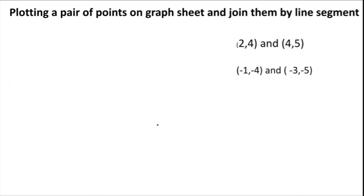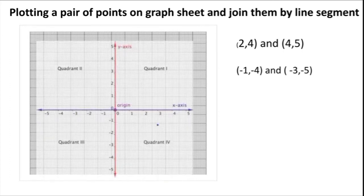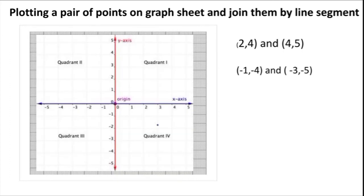Now plotting a pair of points on graph sheet and join them by line segment. Now we have to plot and join the line segments. Here is the plane and you have to identify and locate (2,4) and (4,5). Here is (2,4). So how I am plotting and it is (4,5). Now these two points are located in the quadrant 1 only because these all the coordinates are positive only. Now I have joined by line segment.